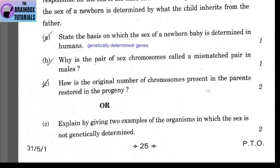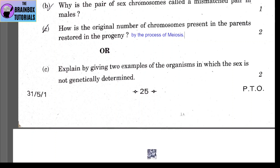Part C: how is the original number of chromosomes present in the parents restored in the progeny? By the process of meiosis, 23 chromosomes come from the male parent and 23 from the female parent, restoring the original number of 46 in the progeny. Part D: two examples of organisms in which sex is not genetically determined — snails and turtles (also crocodiles).